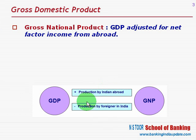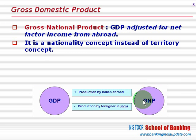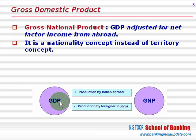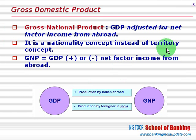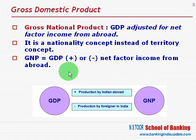After adjusting net factor income from abroad to GDP, what we get is GNP — Gross National Product. This also shows that GNP is a nationality concept instead of a territory concept. In GNP, we take into consideration the production of goods and services by the citizens of that country, so it is a nationality concept, whereas GDP is a territory concept. GNP is equal to GDP plus or minus net factor income from abroad.